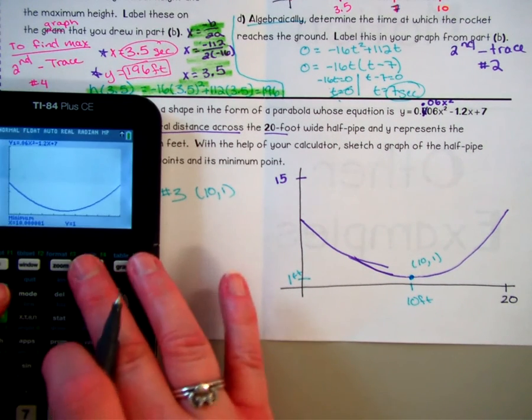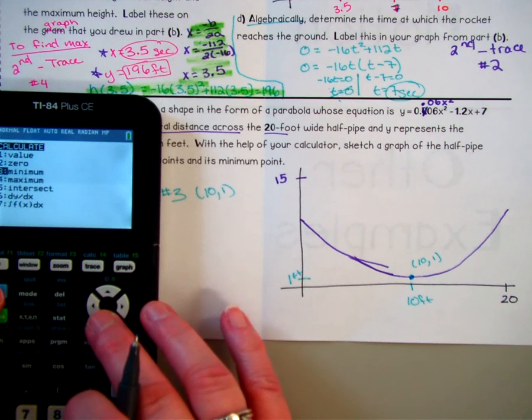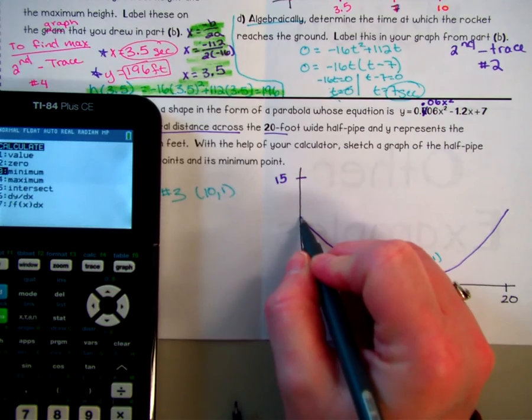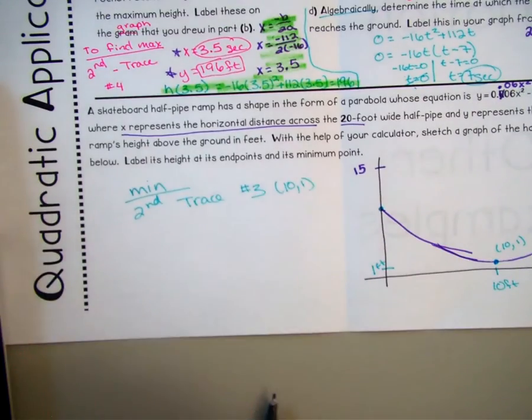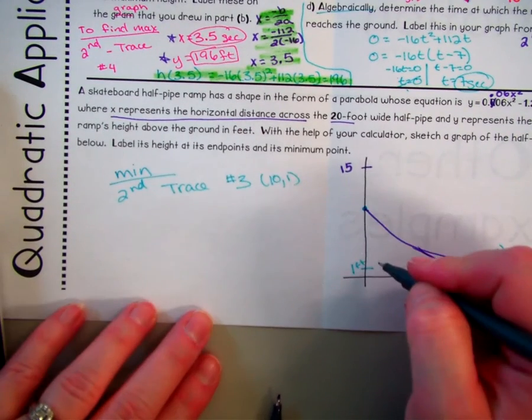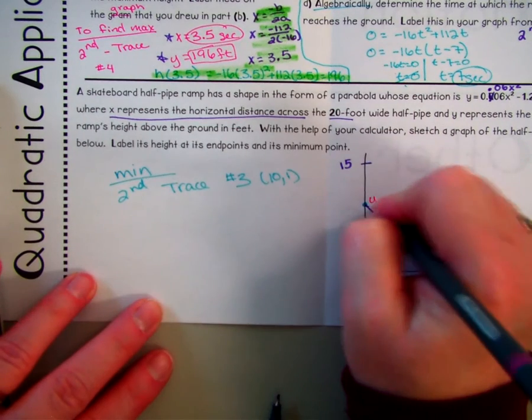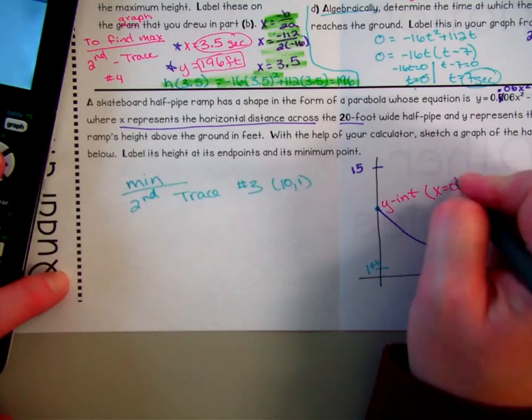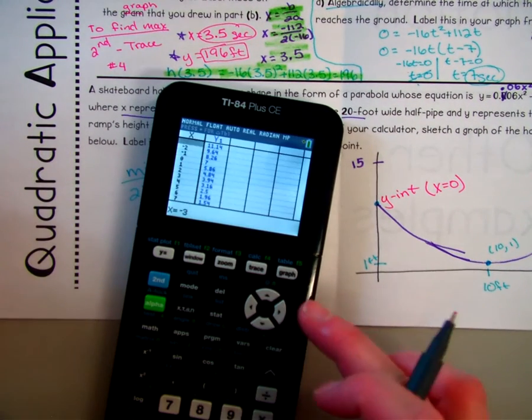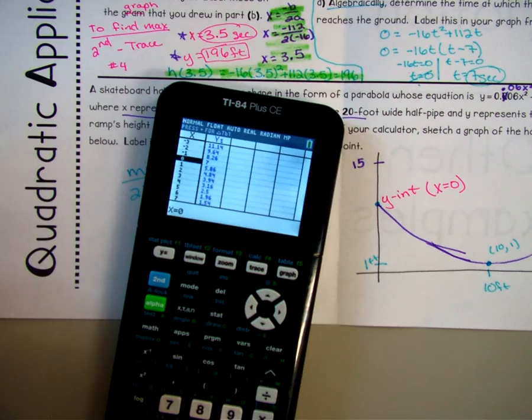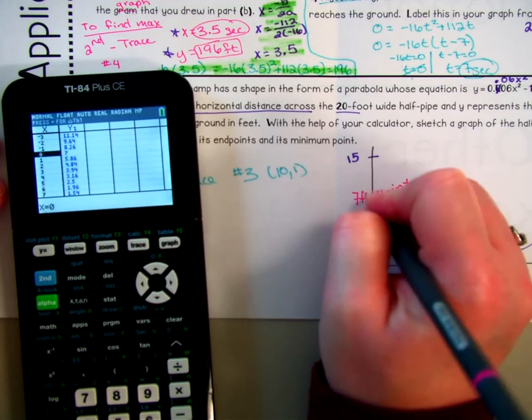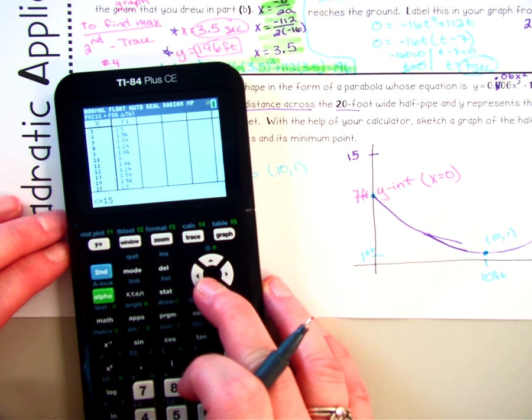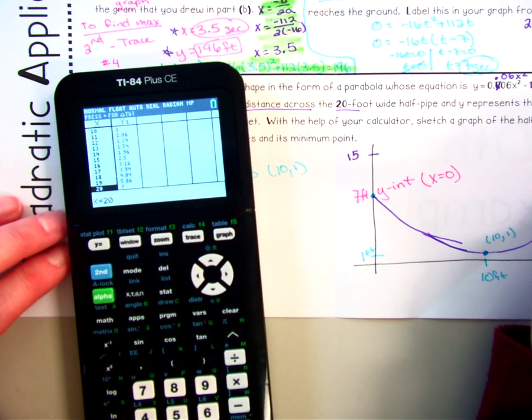And then we need to find our end points. So we've got to find where it is here and here. So for that, right here, this is our y-axis. So really what we're looking for in this part is we're looking for our y-intercept. So our y-intercept is when that x equals zero. So I'm just going to look at my table. It's at seven. This is seven feet. And then I'm going to look at my other end point, which is when x is at 20. So I'm just going to scroll down to 20. And again, that's at seven feet.